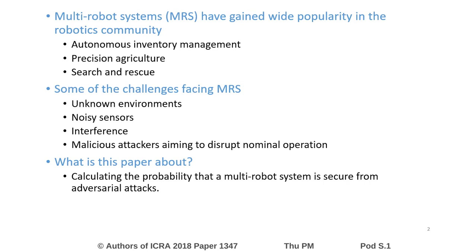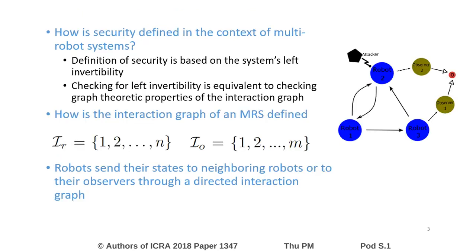So, what is this paper about? This paper aims to calculate the probability that a multi-robot system is secure from adversarial attacks. Security of multi-robot systems can be defined in various ways. In this paper, we are using a definition based on a system's left invertibility, where a system is secure from a perfect attack if it satisfies the left invertibility property.